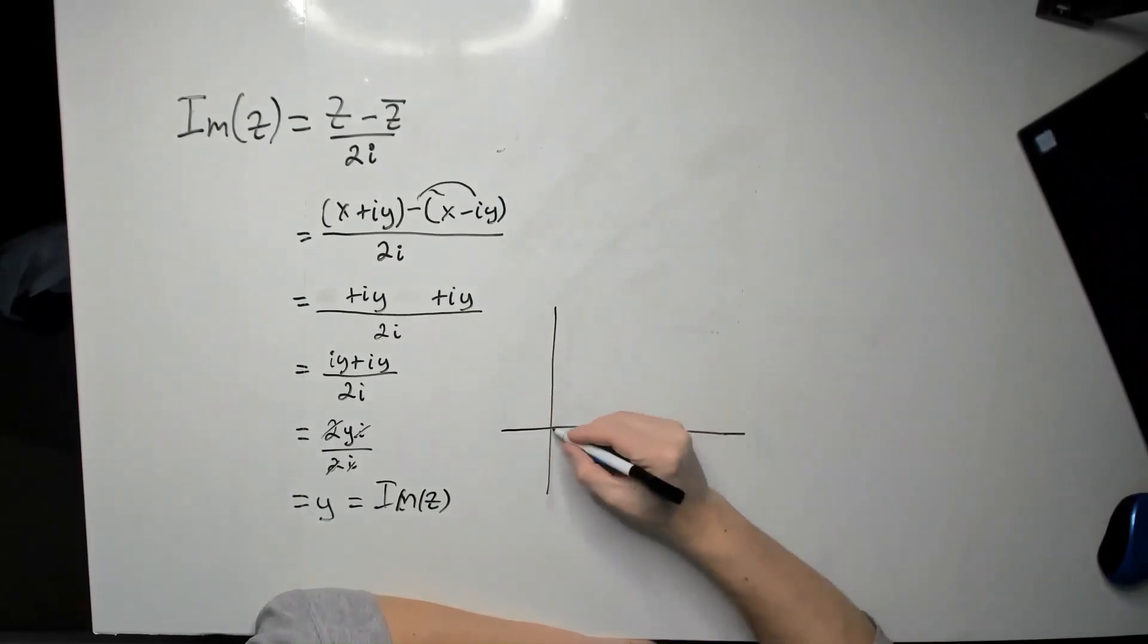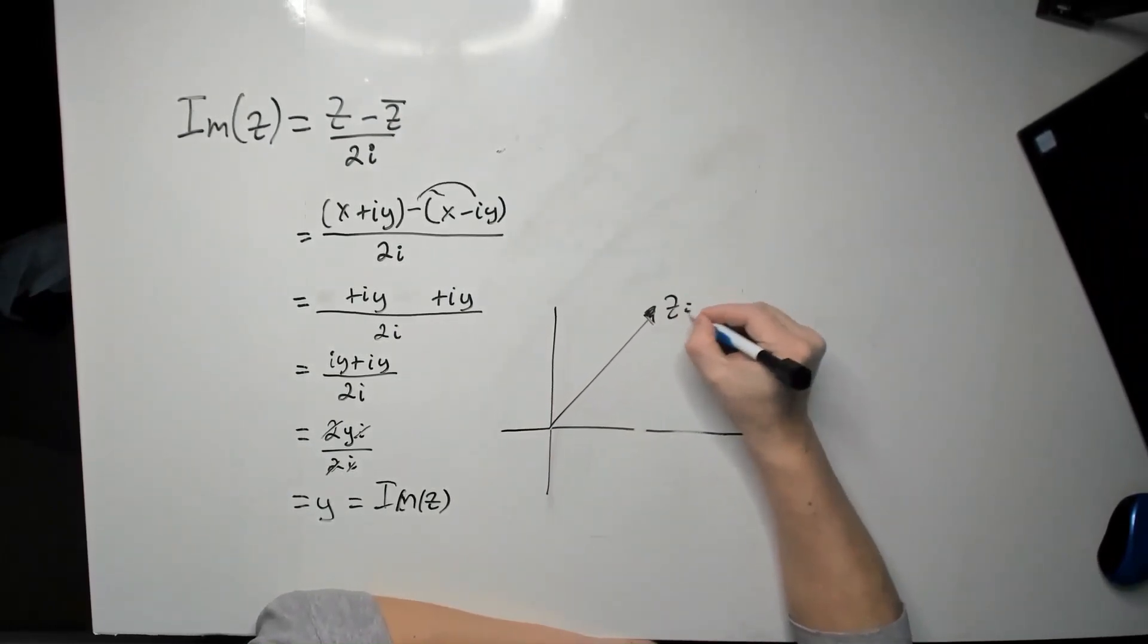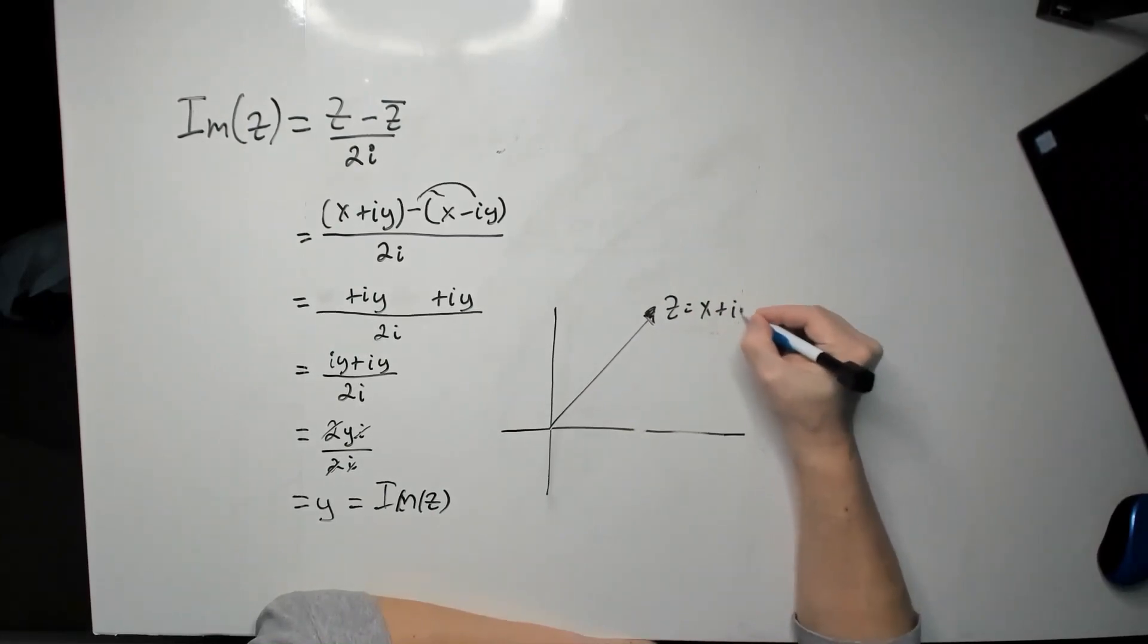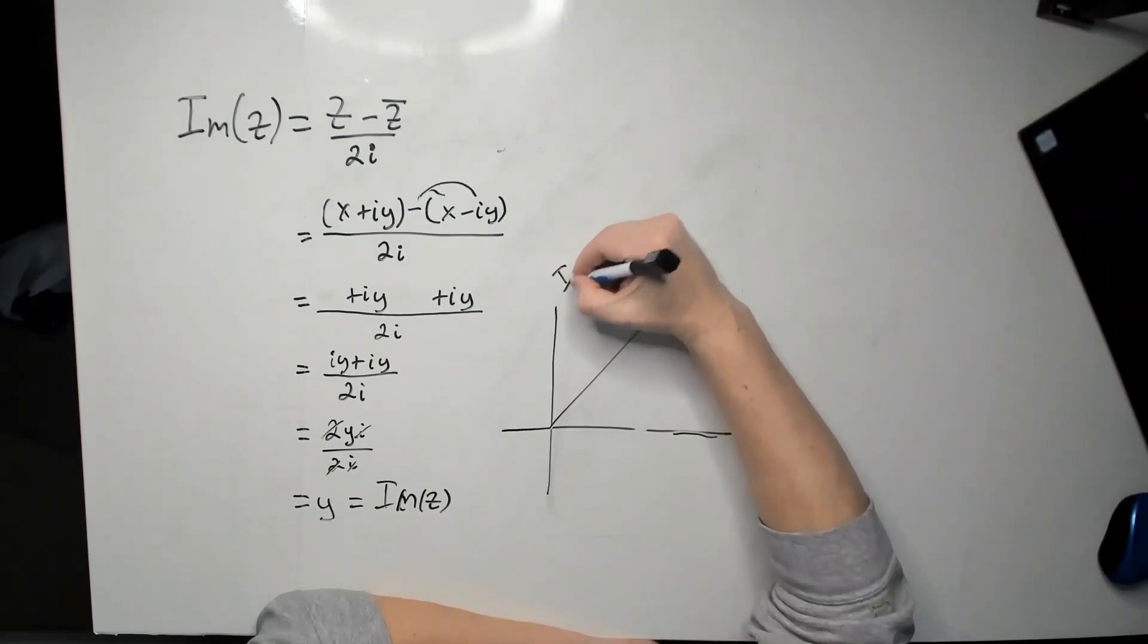Here we are. So if this is the number z, right here, which is x plus iy, so this is the real axis in this context, this is the imaginary axis in this context.